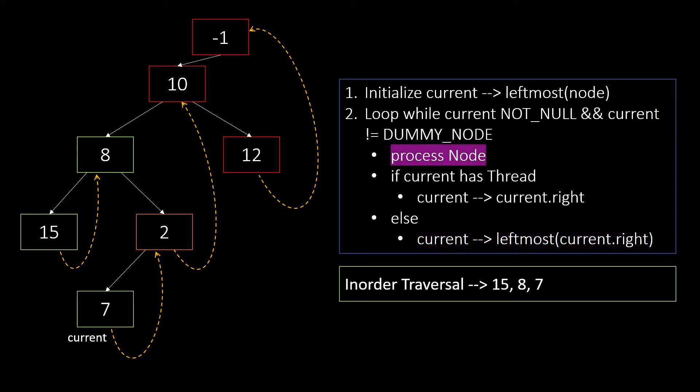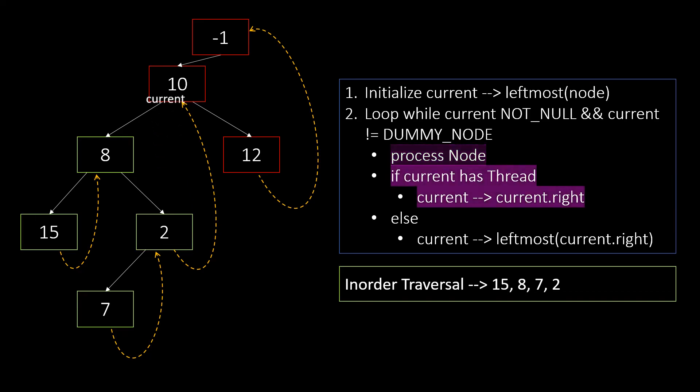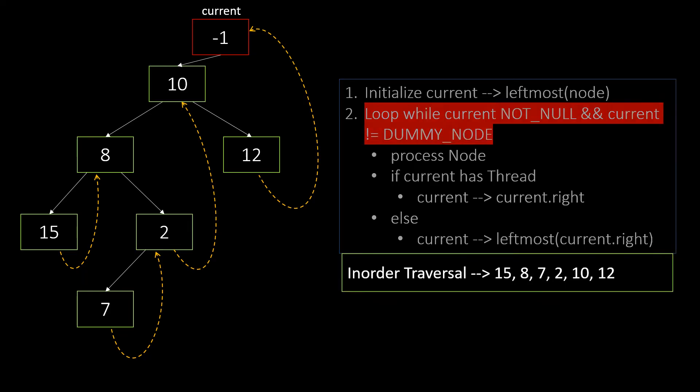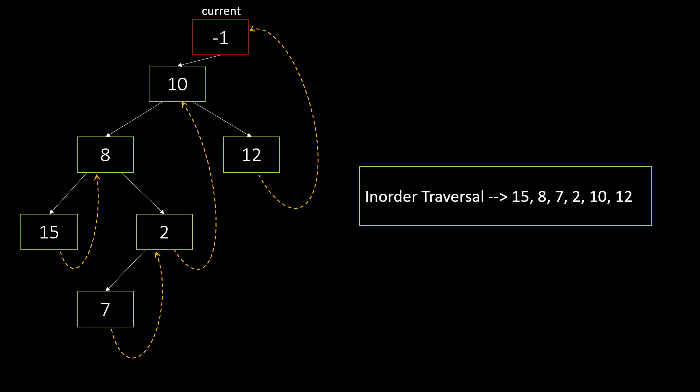Again, we process this node and update the current. We repeat this till we reach the dummy node. Now that the current is pointing to dummy, the looping condition fails and we come out of the loop. This becomes our inorder traversal.